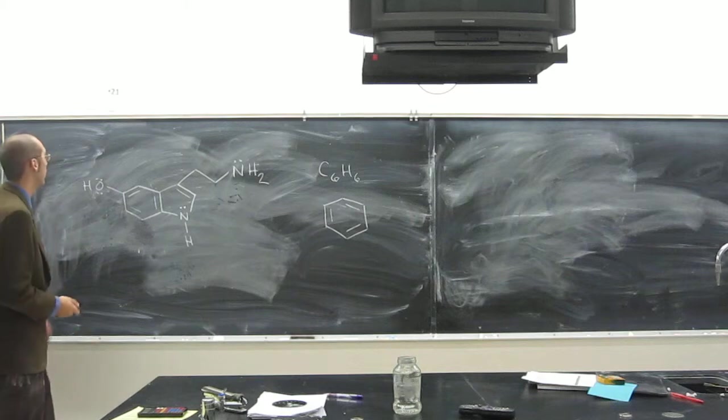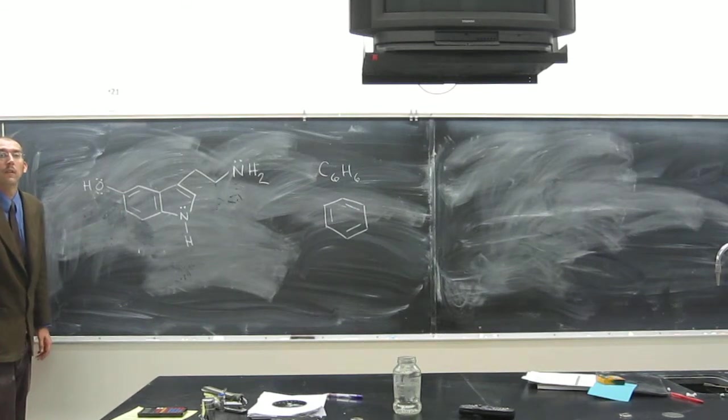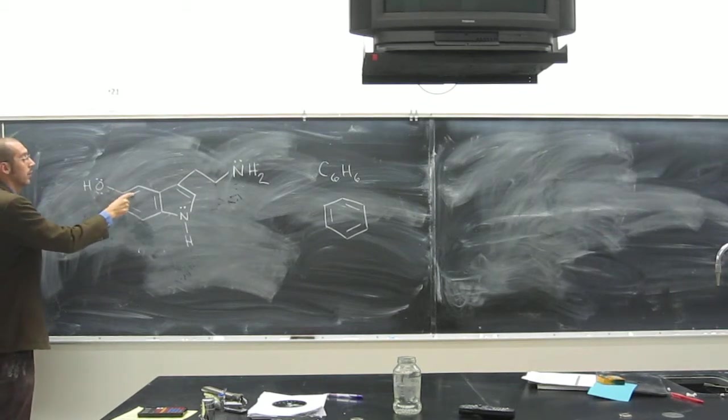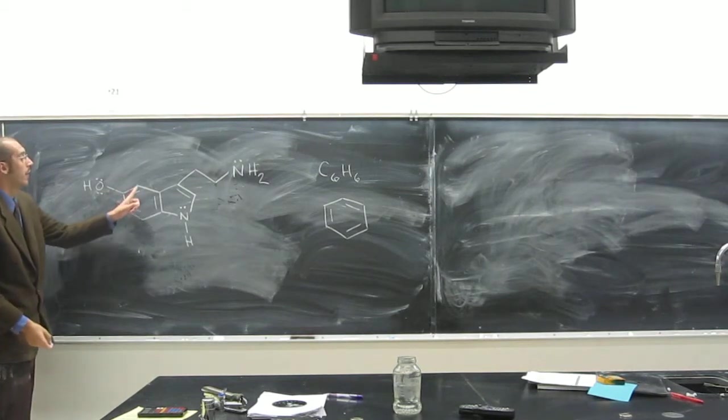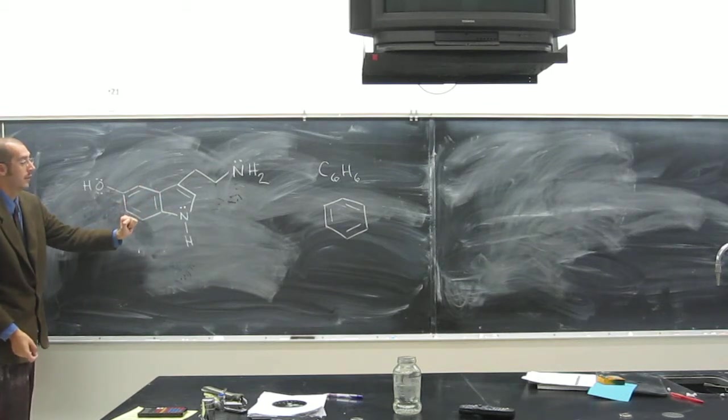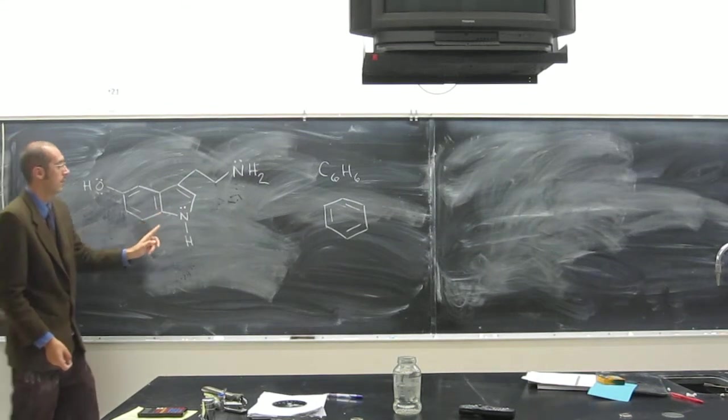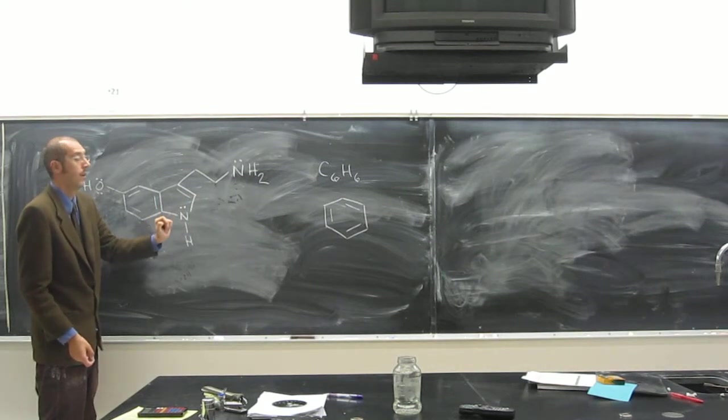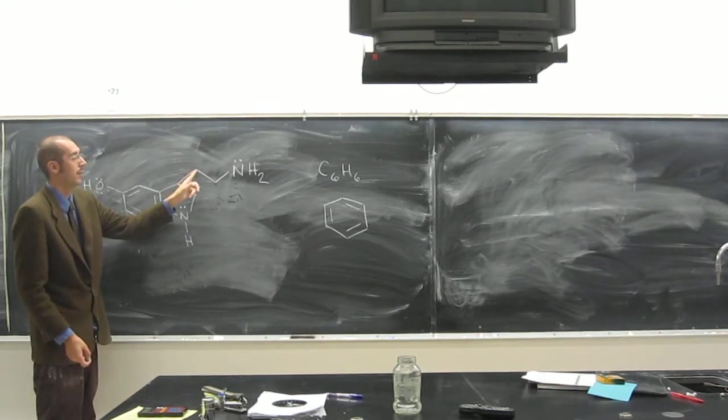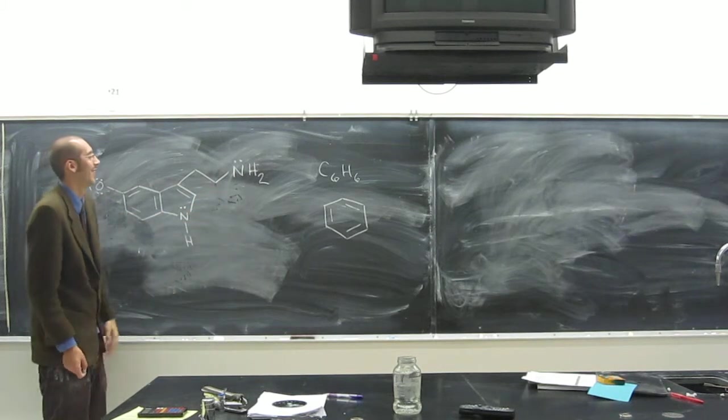So before we all leave, how many hydrogens are on that one? Zero. Why? One, two, three, four. How many on that one? One. How many on that one? One. Very good. This one? Zero. This one? Zero. This one? One. This one? Zero. This one? Two.